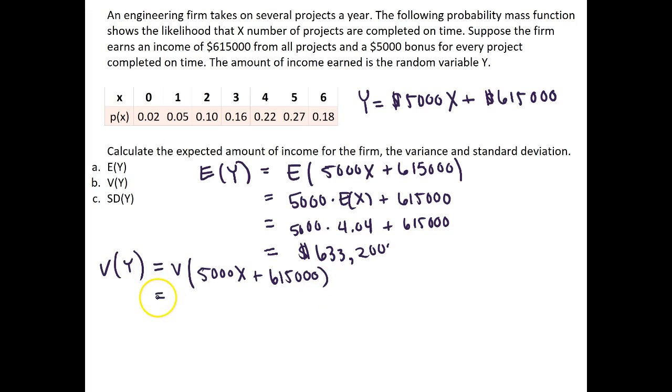And this is then equal to 5,000 squared. So we pull out the value that's being multiplied by X and square it, and this is times the variance of X.